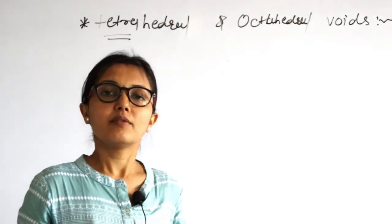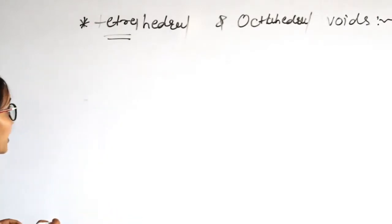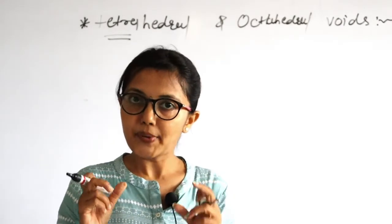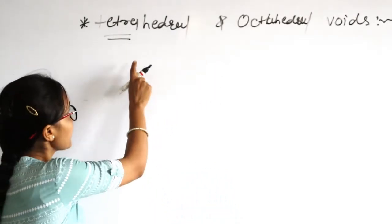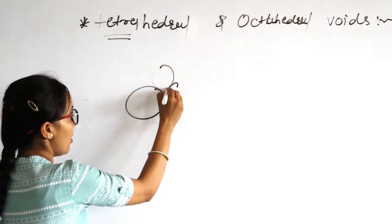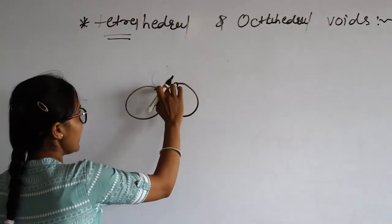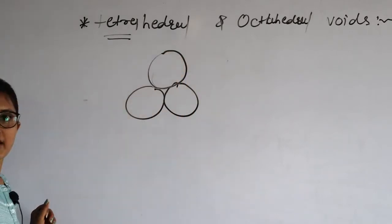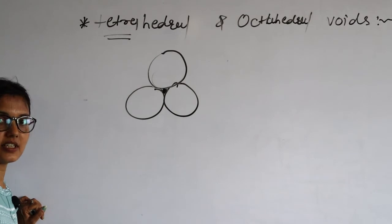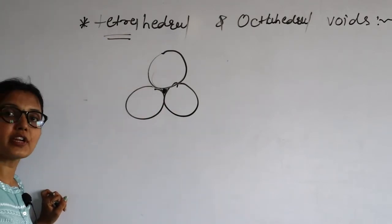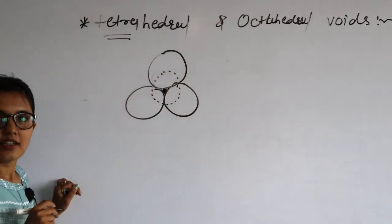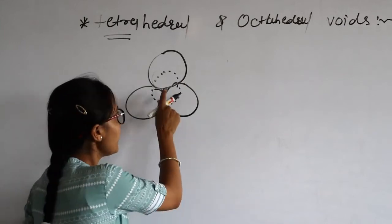First of all, let us define voids. Voids means when any atoms attach with each other and a gap is present between them — this gap is known as voids. Tetrahedral means when all atoms attach with each other and between them there is a gap. Tetra means total four atoms attach with each other.